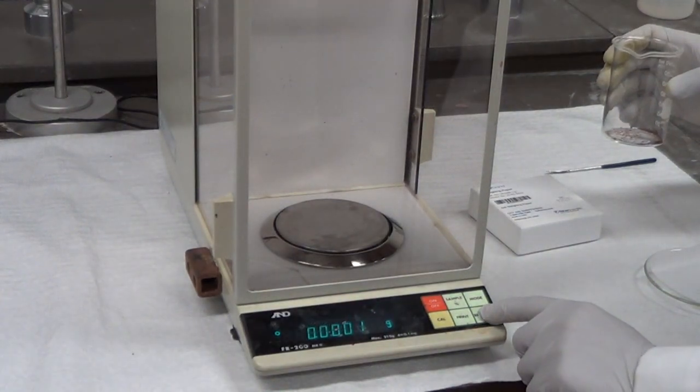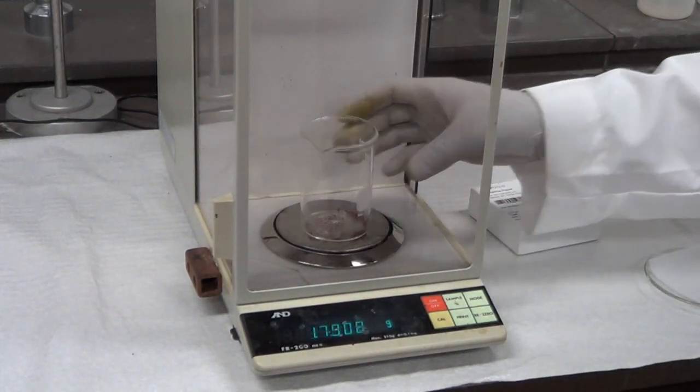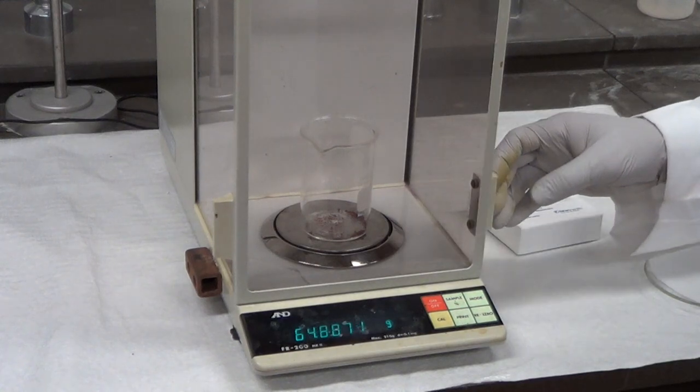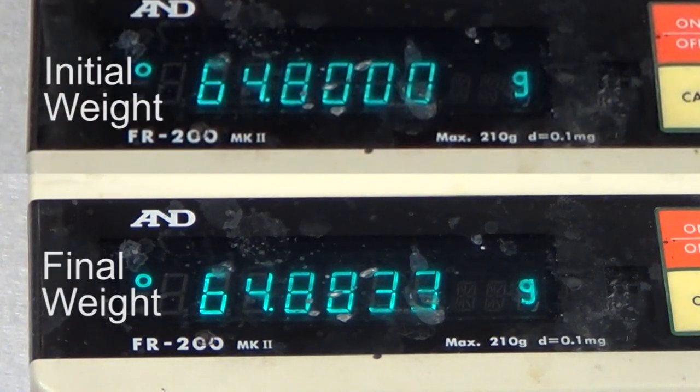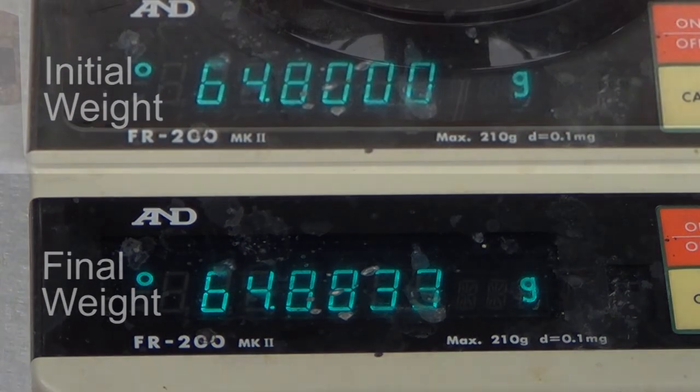We then recorded the weight of the beaker. The difference in the initial and final weight will give us the weight of the precipitate.